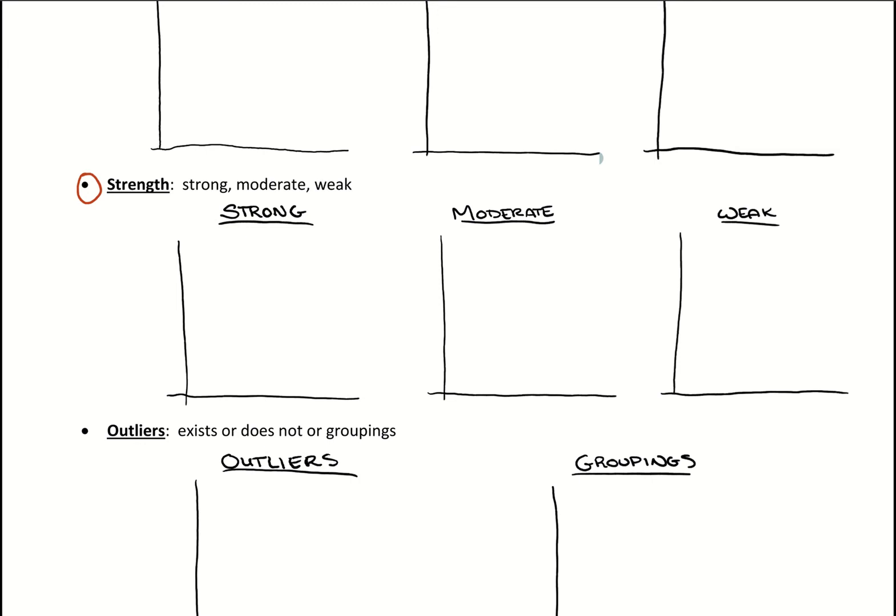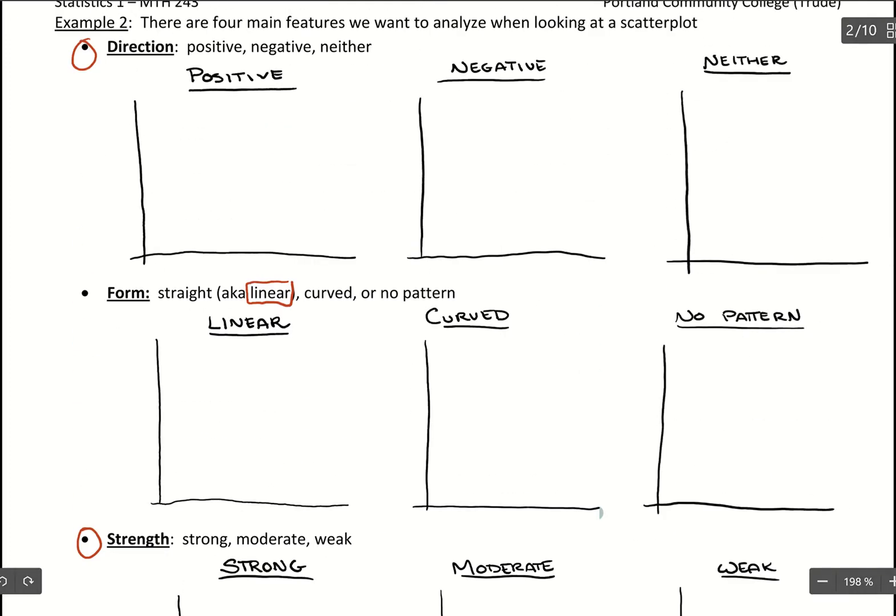But with any linear scatterplot that doesn't have outliers or groupings, we should be able to describe strength and direction based on what we see in our graph.